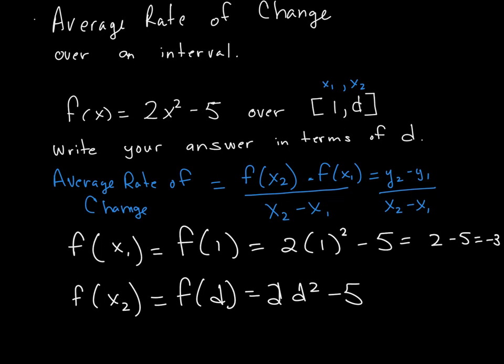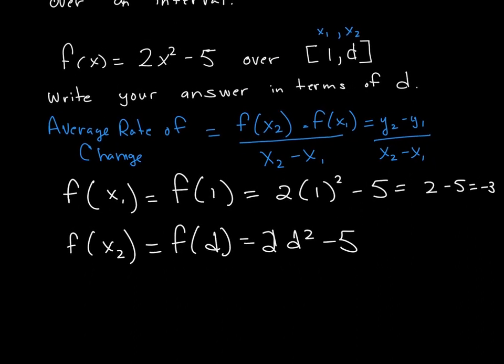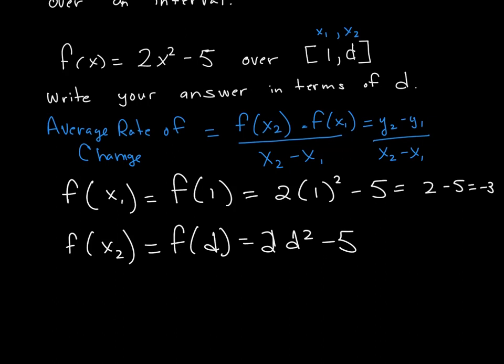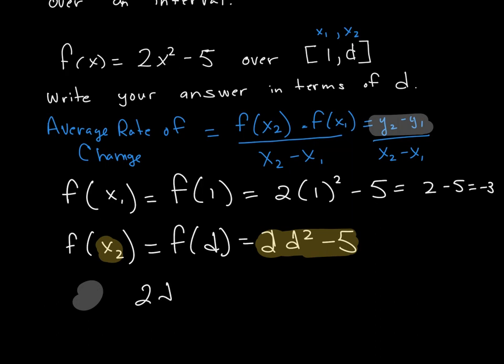Now let's go ahead and put both of those in our formula. For our formula in the numerator, I'm subtracting my two y values. Make sure you subtract them in the proper order. x2 has to come first. So I want to put this in the numerator first. I have 2d squared minus 5, and then I want to subtract negative 3. Remember, you're subtracting negative 3, so make sure you put parentheses around there. And in the denominator, it is going to be your interval, so we are going to subtract d minus 1.